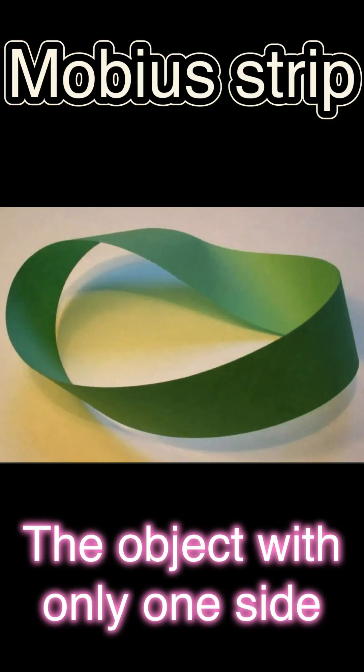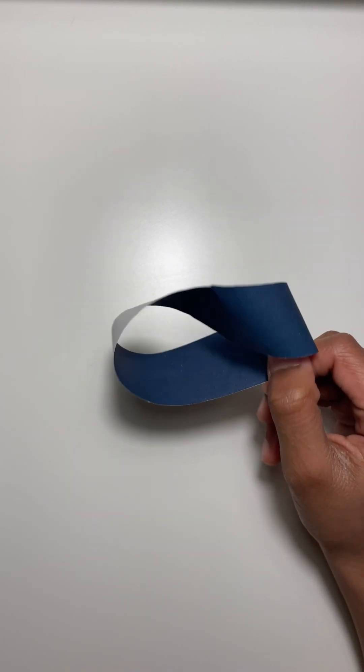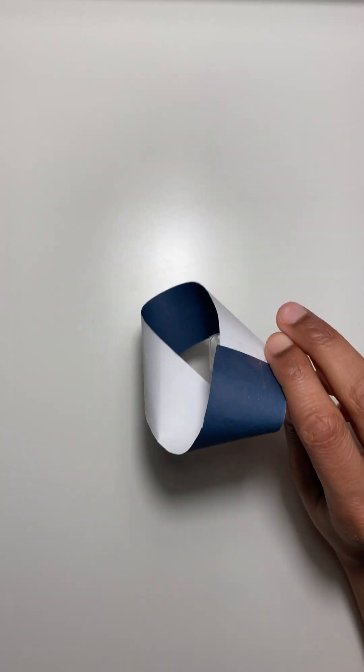This is a Moebius strip. It can be used to understand a fascinating mathematical concept, an object with only one side.